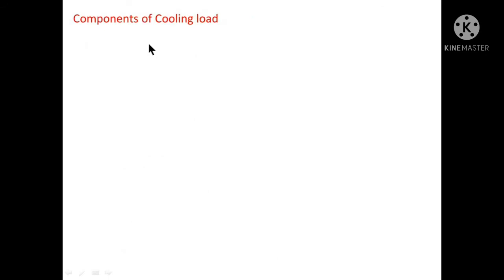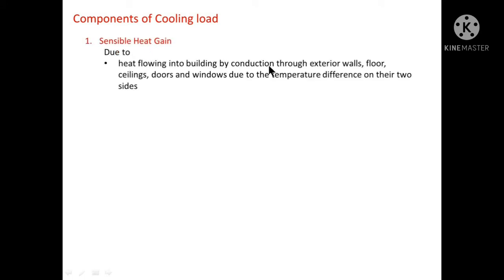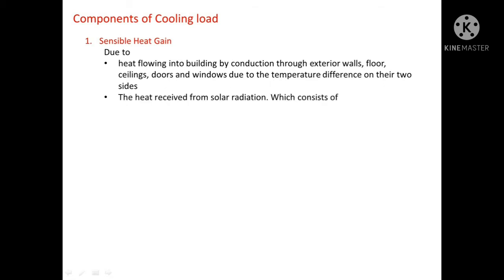Components of cooling load can be divided into two categories: firstly sensible heat and secondly latent heat. The sensible heat gain is due to heat flowing into the building by conduction through exterior walls, floors, ceilings, doors and windows due to the temperature difference on their two sides.